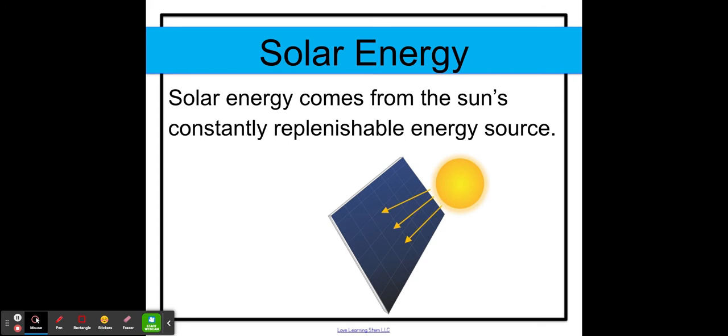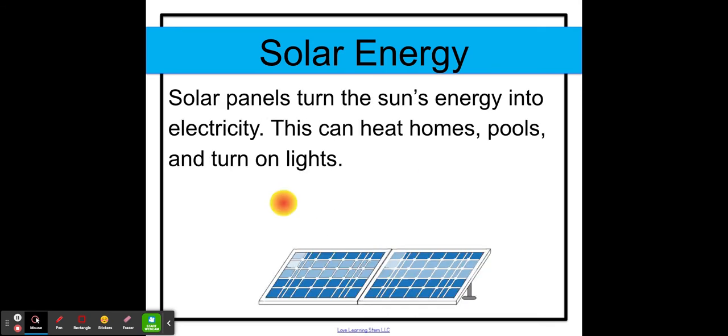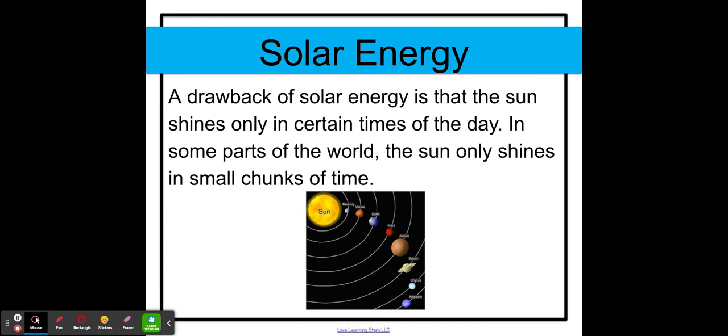So solar energy is our very first one. Solar energy comes from the sun's constantly replenishable energy source, and we have solar panels that turn the sun's energy into electricity. This is really special because it can heat homes, pools, turn on lights, and so much more. There is one drawback of solar energy: the sun doesn't shine 24-7. It only shines certain times of the day, and in some parts of the world, the sun only shines in small chunks of time. So wherever there is not a lot of sun, you can't really have solar energy.